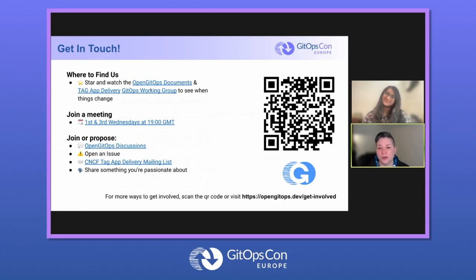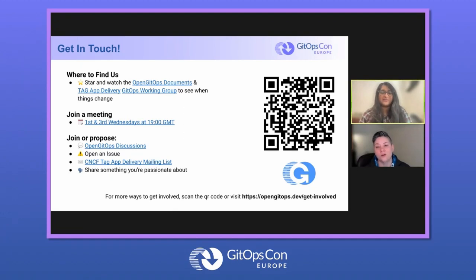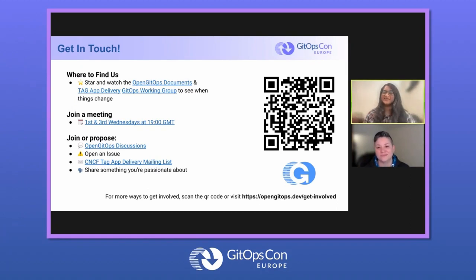If you have something that you're passionate about in and around GitOps, feel free to come and share with us. For more ways to get involved, go to opengitops.dev/get-involved or scan the QR code. We really love people joining the meetings — you can come and just chat with us about whatever. There's always time for people to come and share their ideas or just show us cool things.